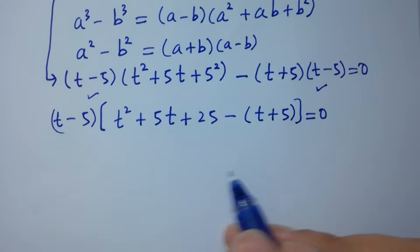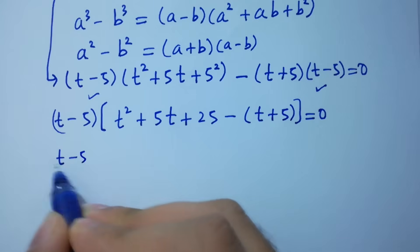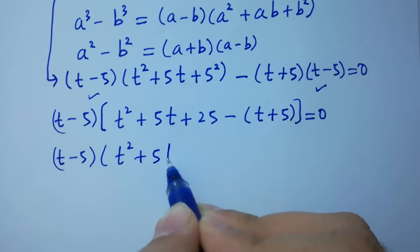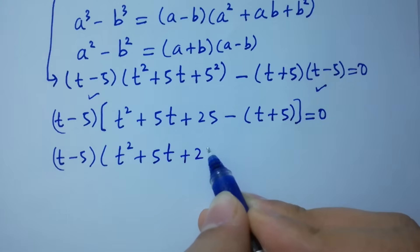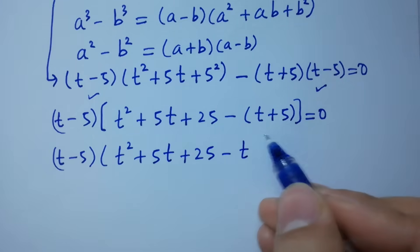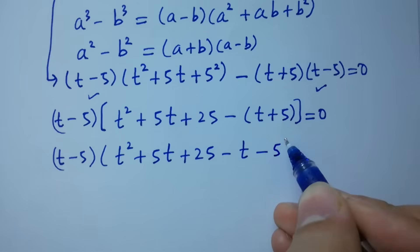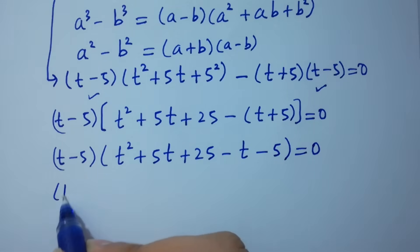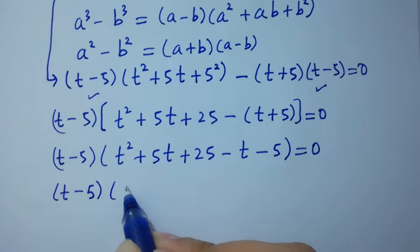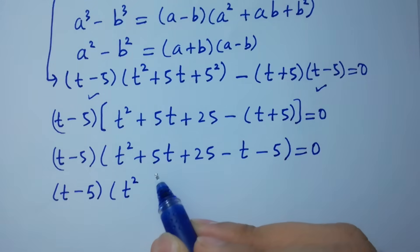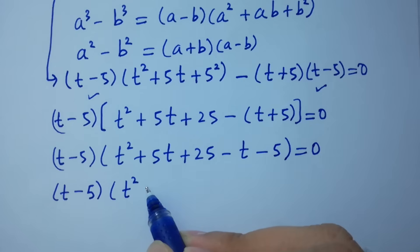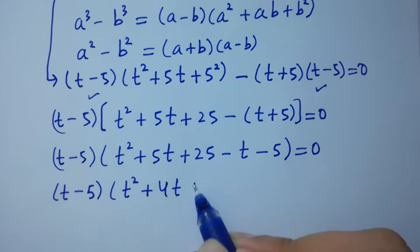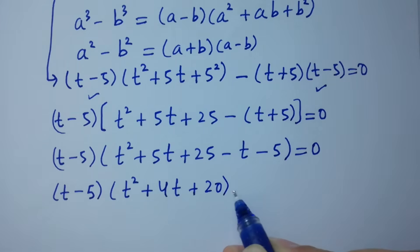Taking t minus 5 as the common factor, we get t minus 5 times t squared plus 5t plus 25 minus t plus 5 equal to 0. Simplifying inside: t squared plus 5t minus 4t plus 25 minus 5, giving t squared plus 4t plus 20 equal to 0.